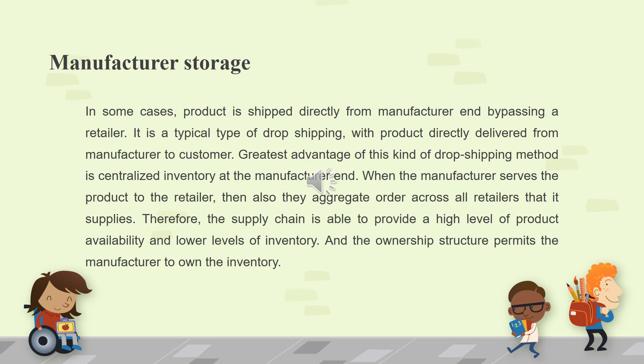In some cases, the product is shipped directly from the manufacturer's end, bypassing a retailer. This is a typical type of drop shipping, with products directly delivered from manufacturer to customer. The greatest advantage of this kind of drop shipping method is centralized inventory at the manufacturer's end. When the manufacturer serves the product to the retailer, they also aggregate orders across all retailers that it supplies.